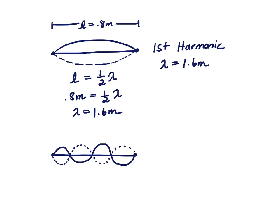Okay. Same string. The length of the string is 0.8 meters. Again, the length of the string is not the same as the wavelength. This is the fourth harmonic, and I want to know, what's the wavelength here?